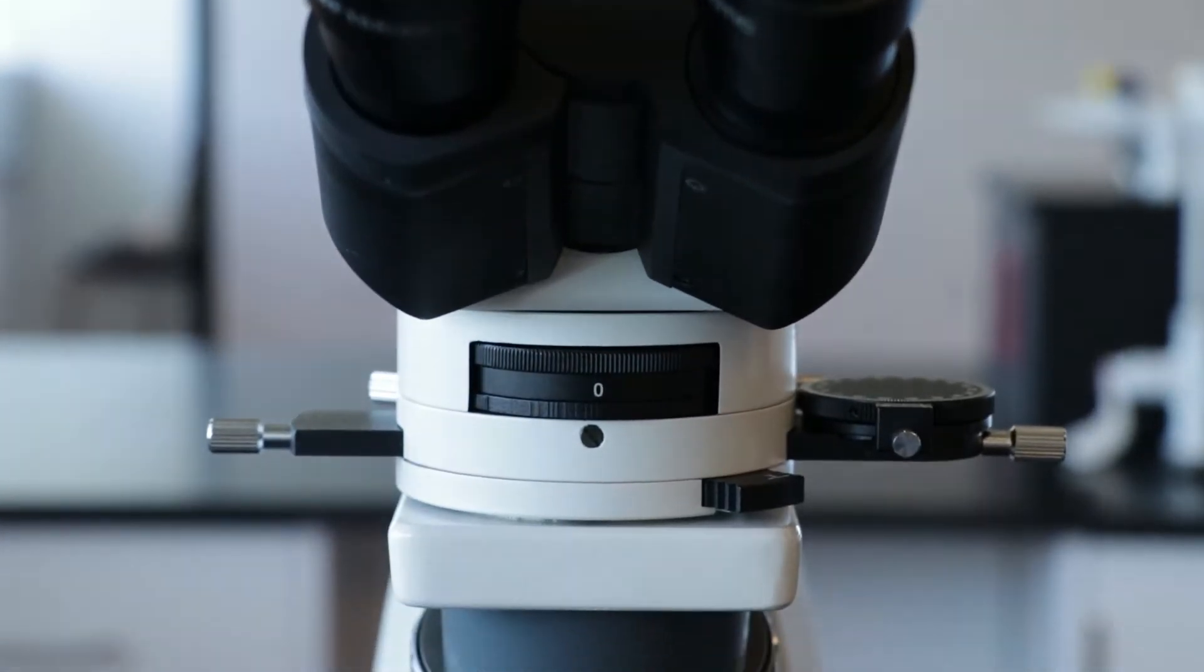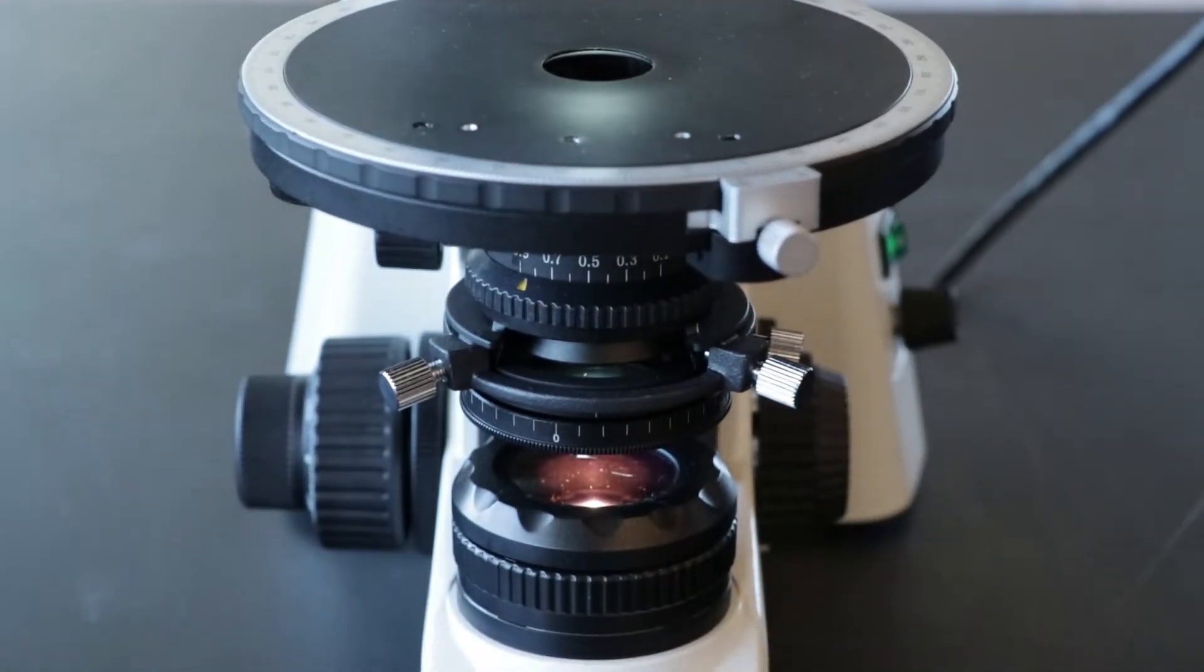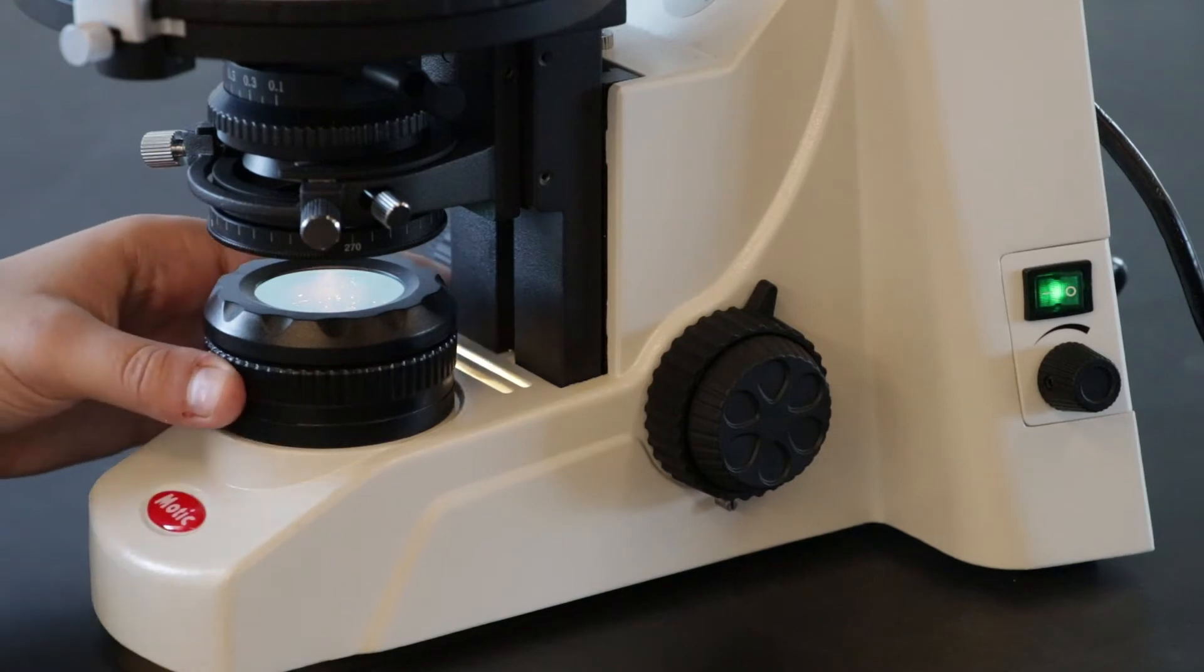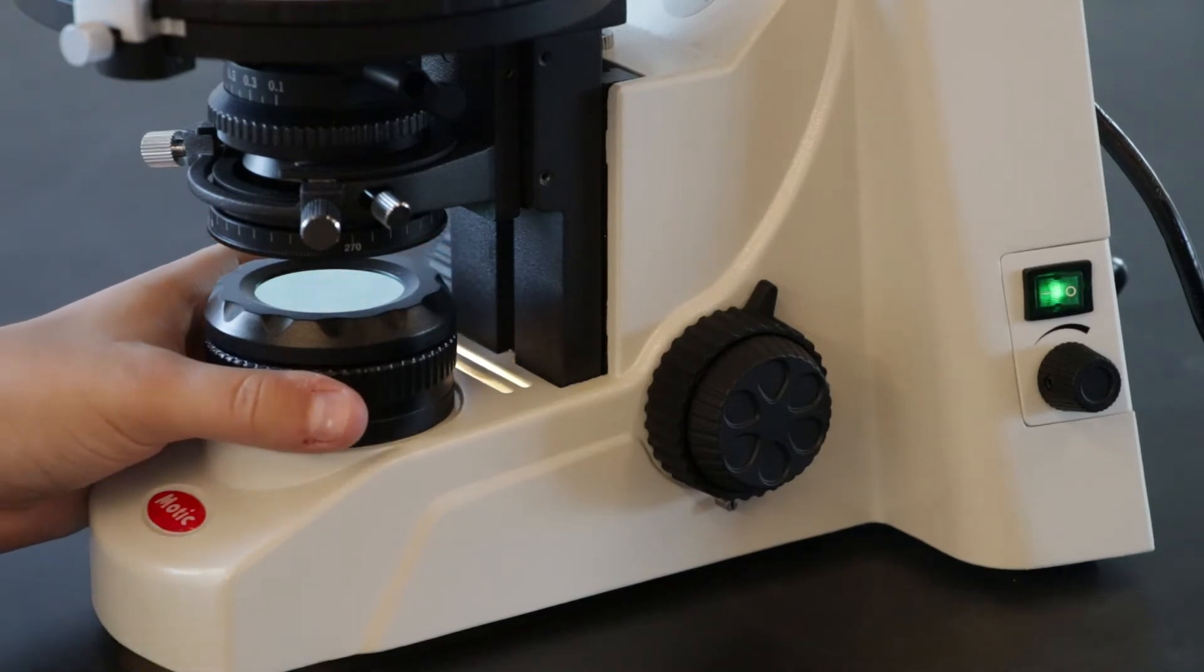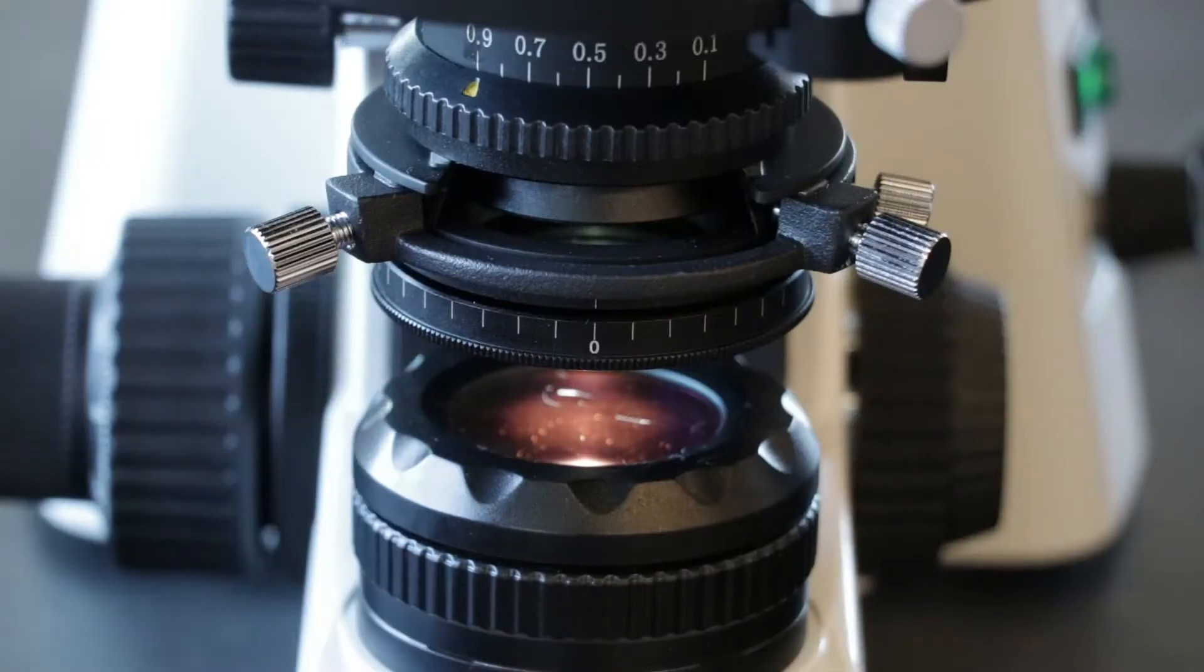Next, we'll look at each component of the microscope and how they can be manipulated. The field diaphragm determines the illuminated area on the thin section. Rotating the field diaphragm ring changes the size of the field diaphragm. For normal observation, the diaphragm is set slightly larger than the field of view.